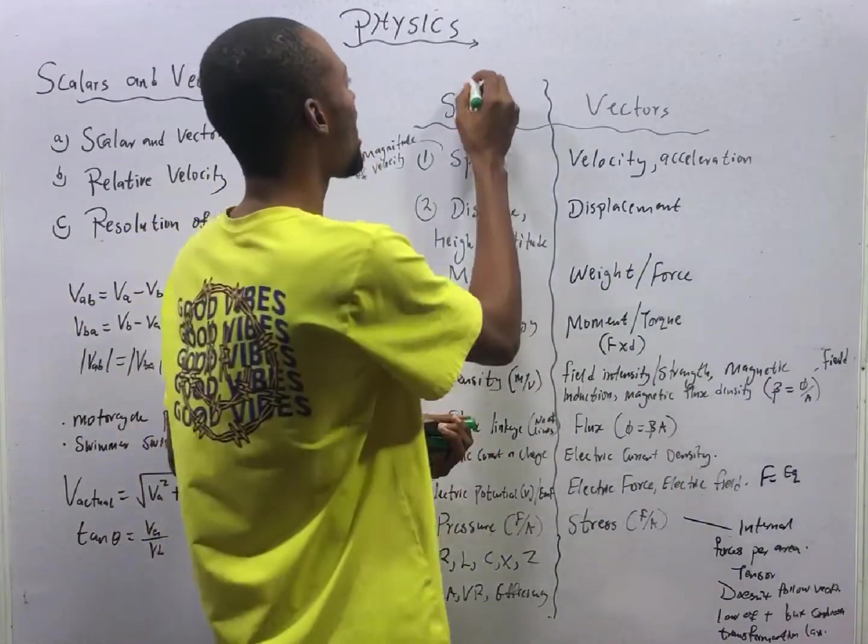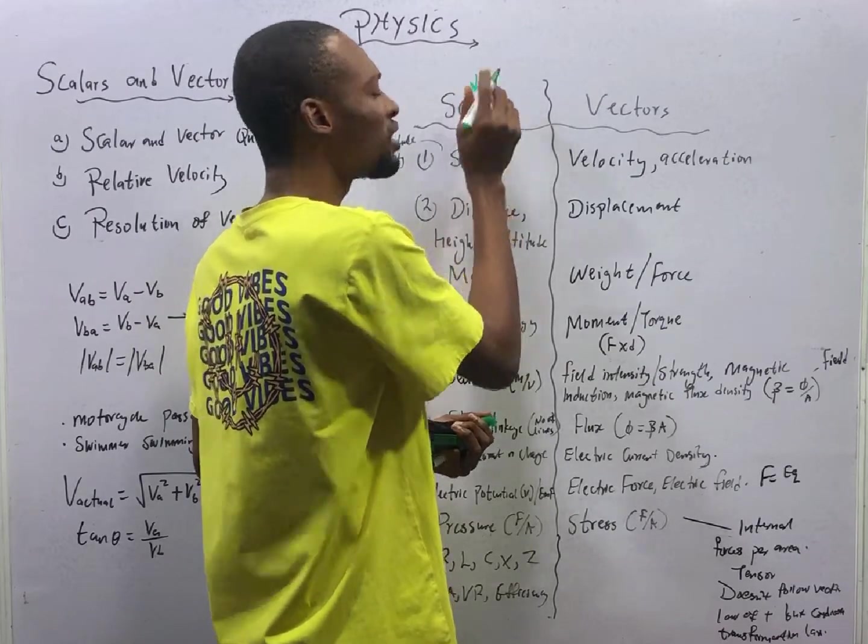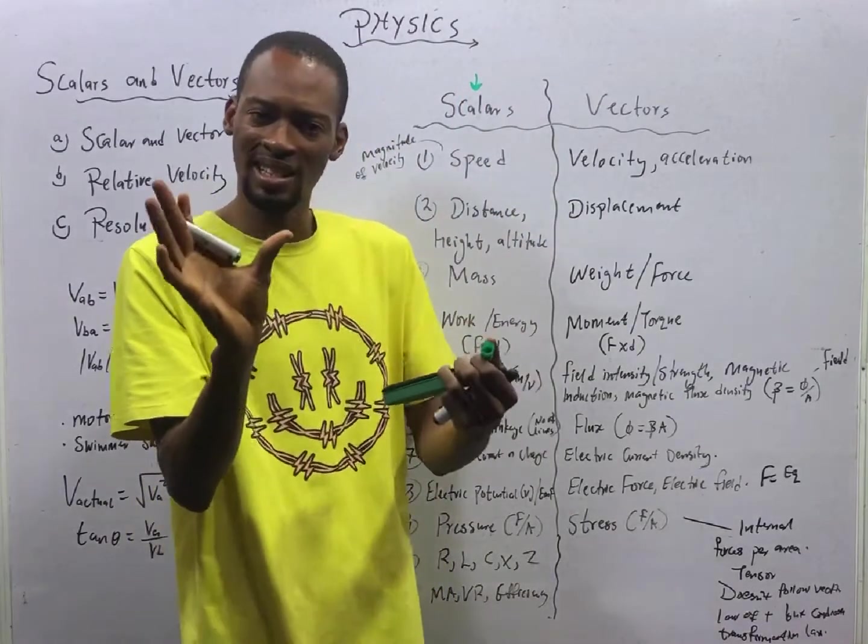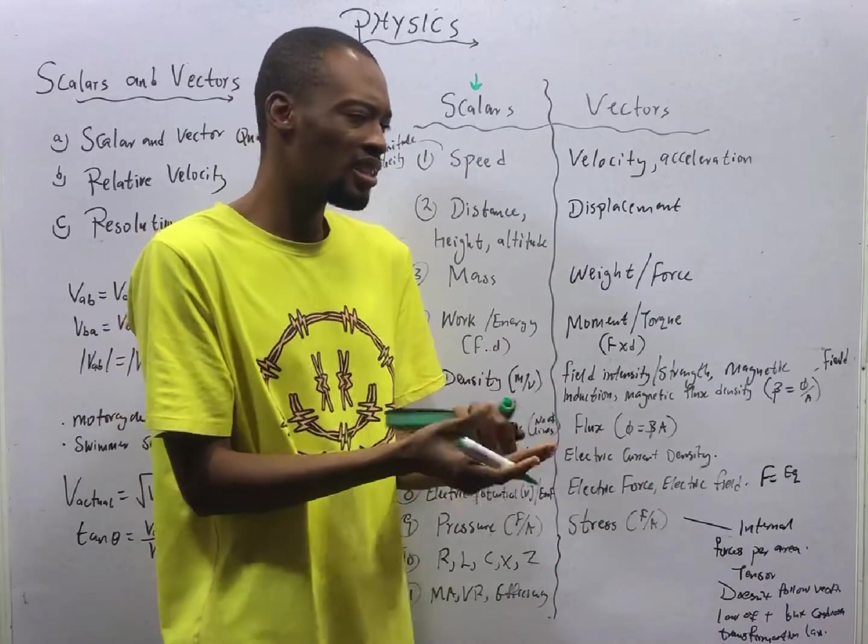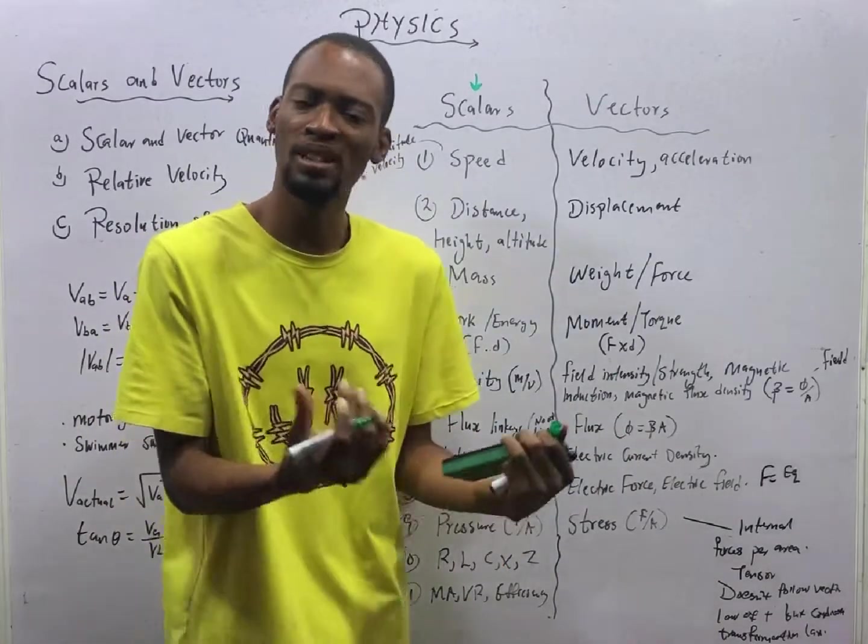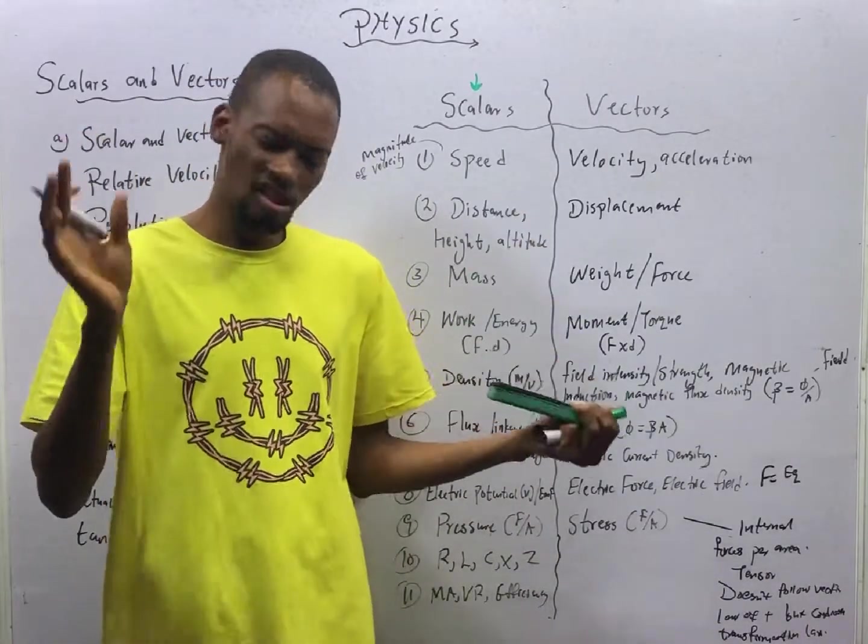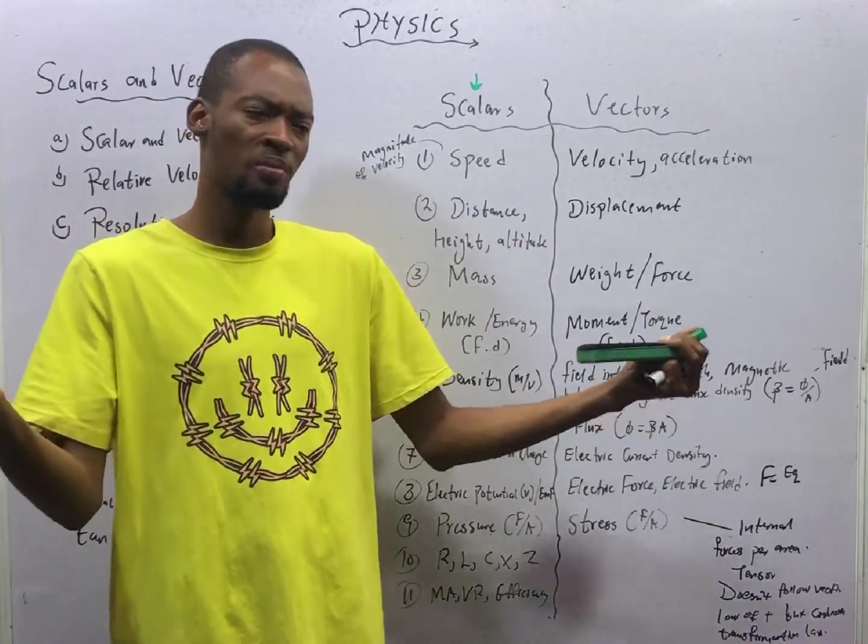Scalar quantities are quantities where we are only concerned about the magnitude or about the size. We are not really concerned about the direction. If we ask you for info about the quantity and you tell us the size, we are okay. We need not to push you to tell us more.